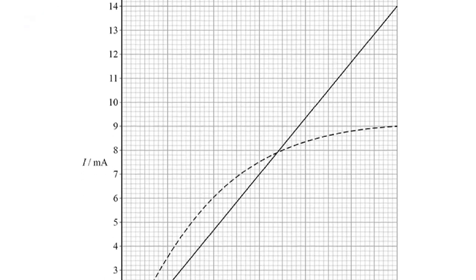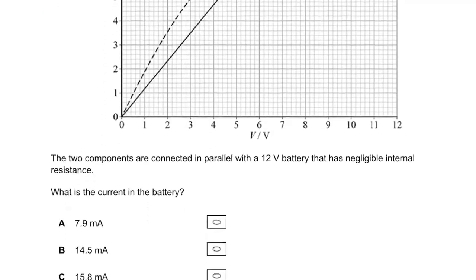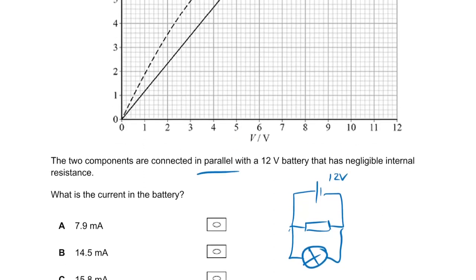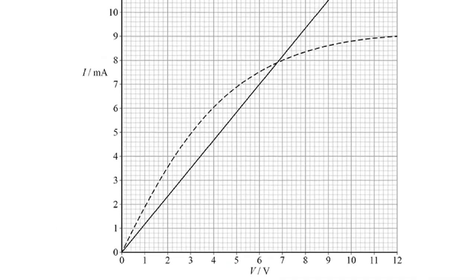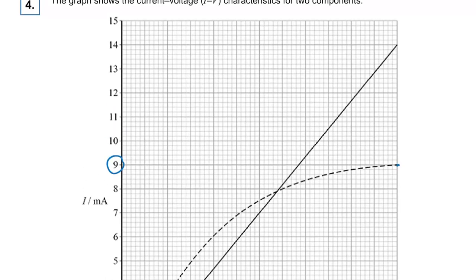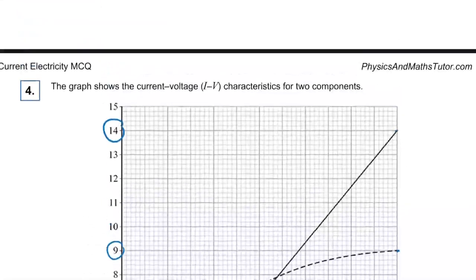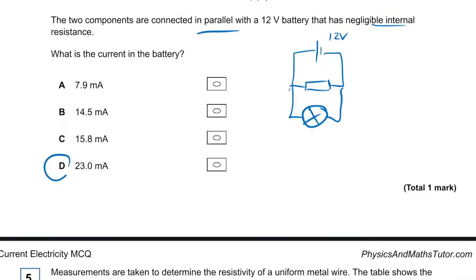Question four: we have a current-voltage graph of two components connected in parallel. One is a resistor (straight line) and one is a lamp (curved line). With a 12-volt battery and no internal resistance, both components get 12 volts each. The current through the lamp is nine milliamps and through the resistor is 14 milliamps. The current in the battery is nine plus 14 equals 23 milliamps.